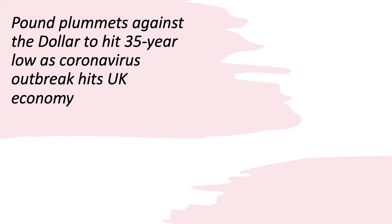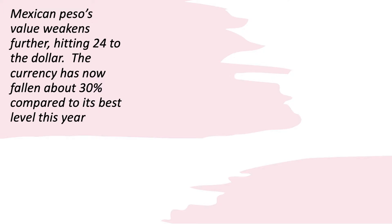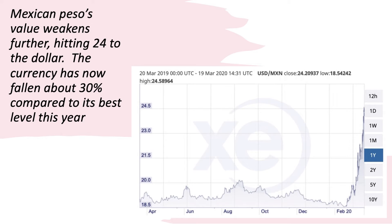Here's a headline: the pound plummets against the US dollar to hit a 30-35 year low as the coronavirus outbreak hits the UK economy. Here's a picture of the pound against the US dollar — it was falling significantly, a huge and volatile depreciation of the pound against the US dollar. In Mexico, the peso has been depreciating quickly; its value has weakened, hitting 24 to the US dollar.